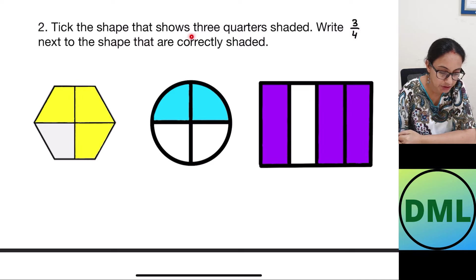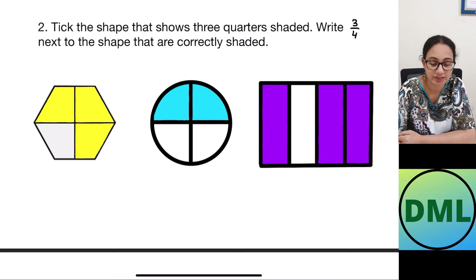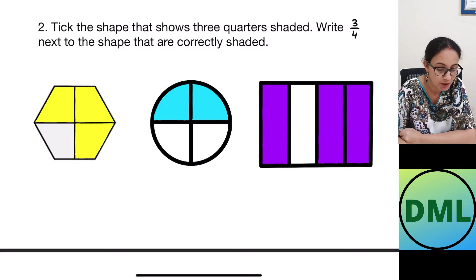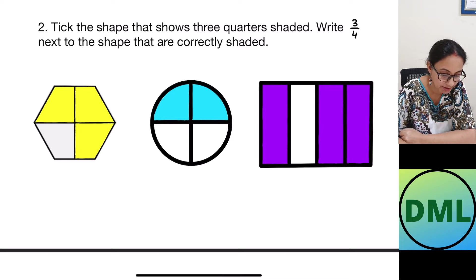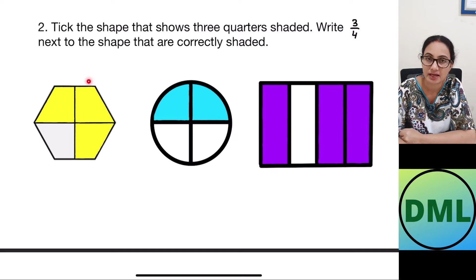Let's see one more example. Tick the shape that shows three quarters shaded — write three by four next to the shapes that are correctly shaded. I have to look for a shape divided into four equal parts with three parts shaded. This shape has been divided into one, two, three, and four parts. Are the parts equal? Yes — one half is here and one half is here, so these two parts are the same.